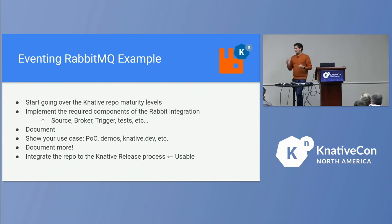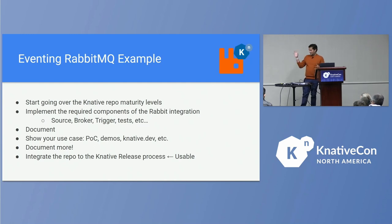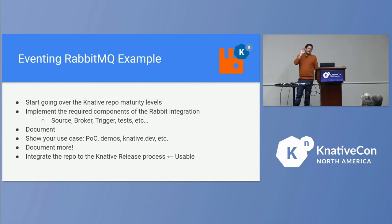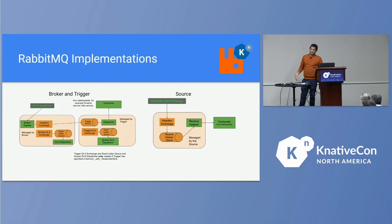Knative Eventing has channel subscriptions, source brokers and triggers, and flows. We deliberately ignored channels and subscriptions and went for the broker, trigger, and source abstractions — a higher-level approach for our use case — and started documenting. We started documenting as soon as we were implementing, but it was not enough. We realized we were not getting the right kind of documentation for our users, so we started building POCs, demos, getting RabbitMQ into the Knative docs, doing talks, writing blogs, and at that point we started getting users and feedback, which was key.